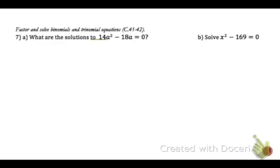In concepts 41 and 42, you learn factoring, and then factoring and solving binomials and trinomials. You just have to look at each problem and kind of take it one at a time. So 7a says, what are the solutions to 14a squared minus 18a equals 0? So let's see if we can factor. Remember when we're factoring, we always look for a greatest common factor, which can be numbers and variables. So I know that 2 will divide into both 14 and 18, and also I can divide out 1a. So that's my factor that will come out front, and then once I divide those out, I have 7a minus...